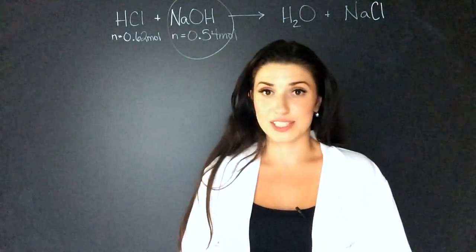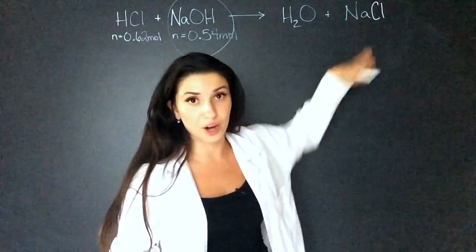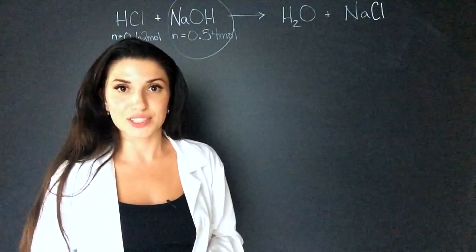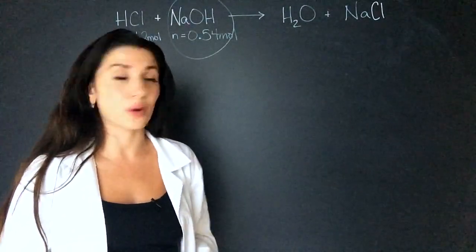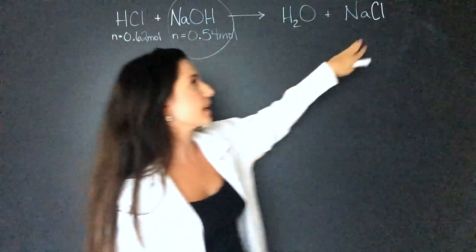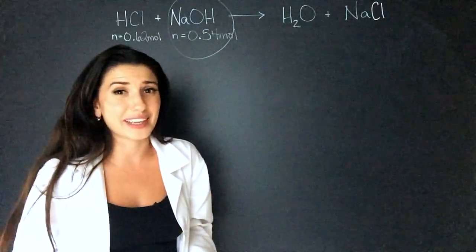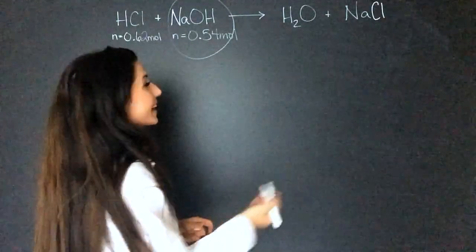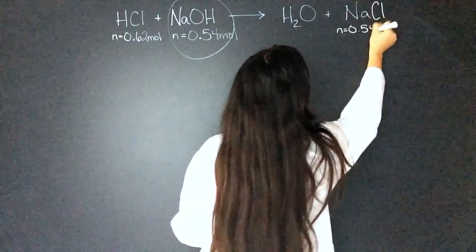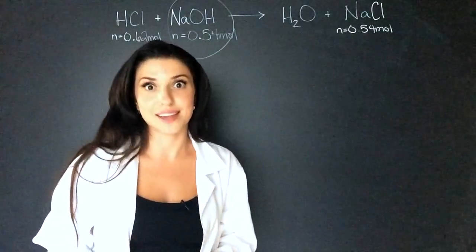The second part of this question is how many moles of the salt are made. Now in this case, it's kind of like finding theoretical yield. All we have to do is compare the stoichiometry coefficient. So there's one mole of sodium hydroxide is going to give us one mole of sodium chloride. So we don't actually have to do any work. We're going to have 0.54 moles of the salts. And there's question two. Done.